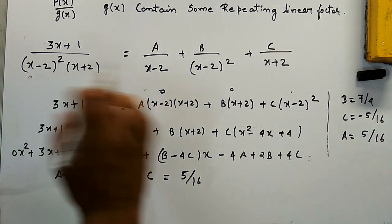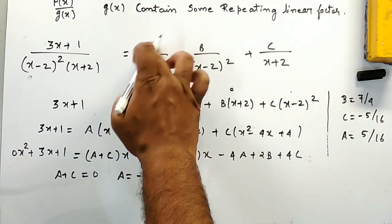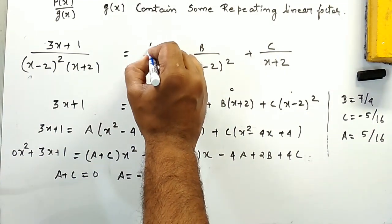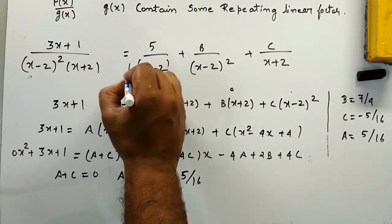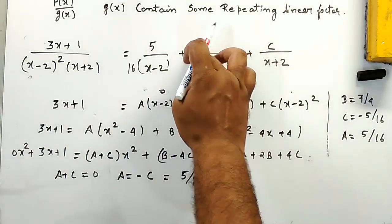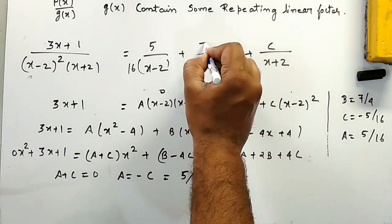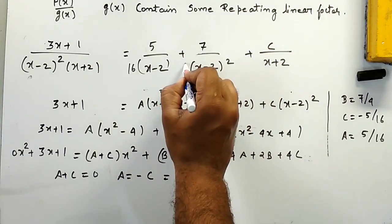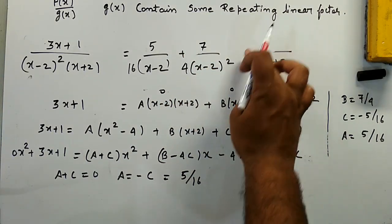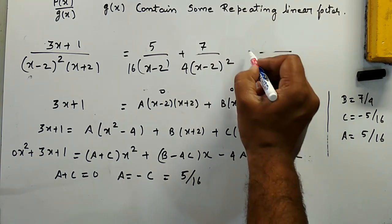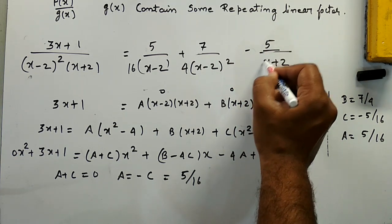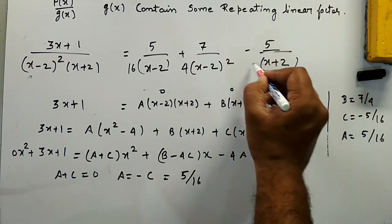So the partial fraction of this expression is: 5/16·(x - 2) + 7/4·(x - 2)² + (-5/16)·(x + 2), substituting A = 5/16, B = 7/4, and C = -5/16.